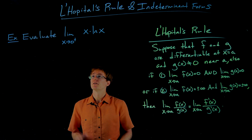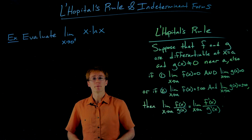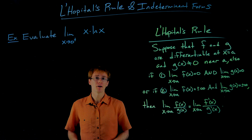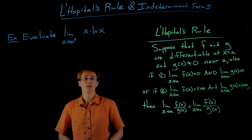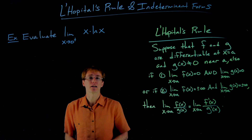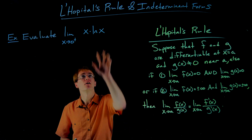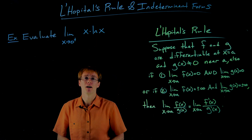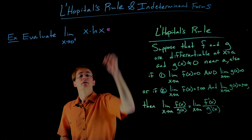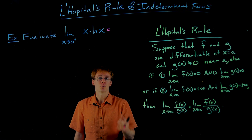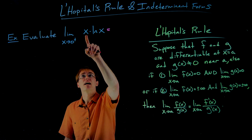In this example, we're trying to evaluate the limit as x approaches 0 from the right of x times the natural log of x. We have a one-sided limit because the natural log component is only defined for positive x values.